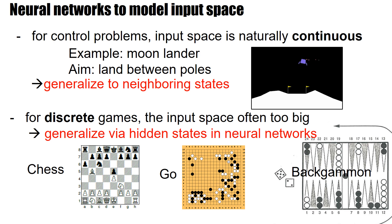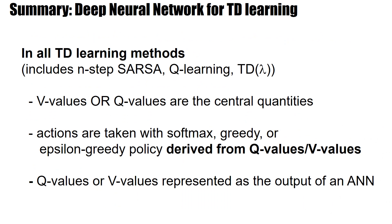In all methods implemented in a neural network — whether a shallow network, a deep network, or a radial basis function network — we use TD learning methods. This includes N-step SARSA, Q-learning, TD(λ), or other algorithms with eligibility traces. The central quantities are V-values or Q-values, and once we have them, actions are taken with softmax, greedy, or epsilon-greedy policy, which directly follow from these learned Q-values or V-values. These Q-values or V-values are the outputs of the artificial neural network.